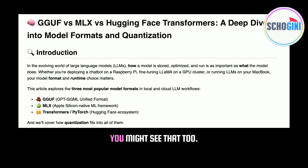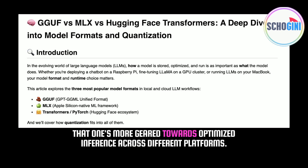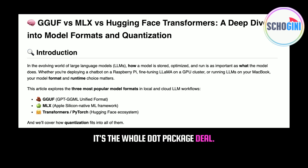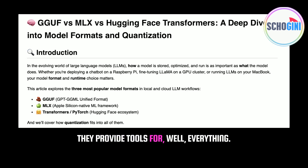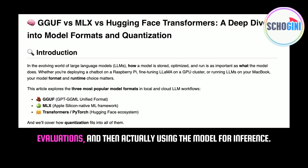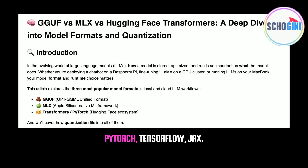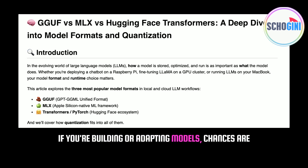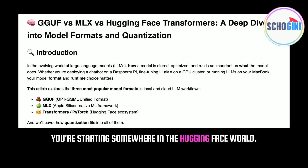There's also .onnx — that one's more geared towards optimized inference across different platforms. But Hugging Face is more than just the file format — it's the whole package deal. It's not just the model weights; they provide tools for everything: training from scratch, fine-tuning existing models, running evaluations, and then actually using the model for inference. It works with all the major frameworks — PyTorch, TensorFlow, JAX. It's designed to be plug-and-play. If you're building or adapting models, chances are you're starting somewhere in the Hugging Face world.